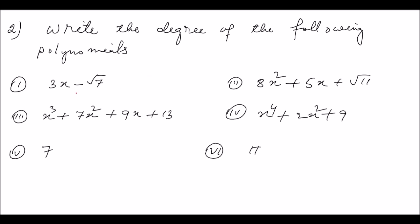To find the degree of a polynomial, check the variable and find its highest power. The polynomial has variable x, and x means x to the power one. So the degree is one. The degree of this polynomial equals one.